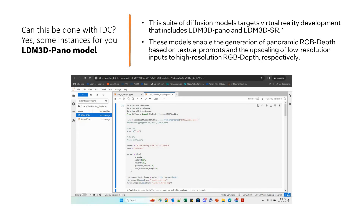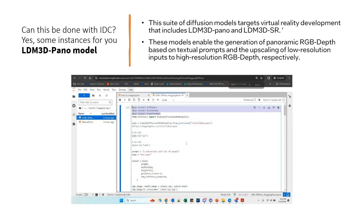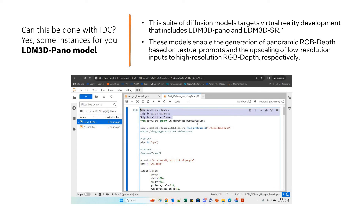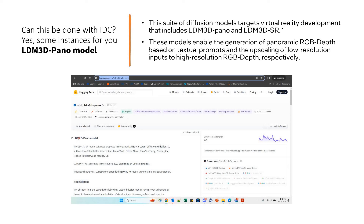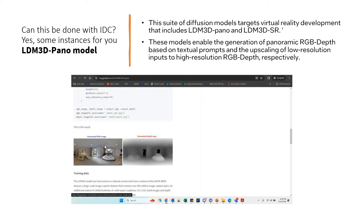Now we do something with Intel Developer Cloud and try a different model — the LDM-3D Pano model. These models enable generation of panoramic RGB depth based on textual prompts. We feed in a textual prompt and the output will be fantastic. After the necessary installations, the only thing you need to be careful about is including the proper model name: intel/ldm-3d-pano. I'm walking you through the official page as well — there are a lot more details there and it is very interesting.